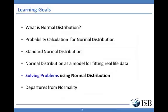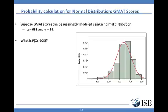We now come to the part all of you have been waiting for: how to solve problems using a normal distribution. Let's get a hang of this by going through some calculations ourselves. Suppose GMAT scores can be reasonably modeled using a normal distribution with mean 638 and sigma 66. We superimpose such a normal curve on the histogram of the GMAT scores data, and we see that it is not very different from the histogram created using the raw data. Using the fact that GMAT scores are normally distributed, what is P(X ≤ 600)?